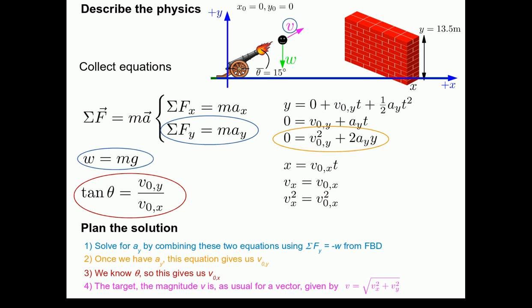With v0x, our target variable v, which is just the magnitude of the velocity, can be calculated in the normal way of calculating the magnitude of the vector. We have the y component of the initial velocity. We have the x component of the initial velocity. We can just use the Pythagorean theorem to solve for our target variable.